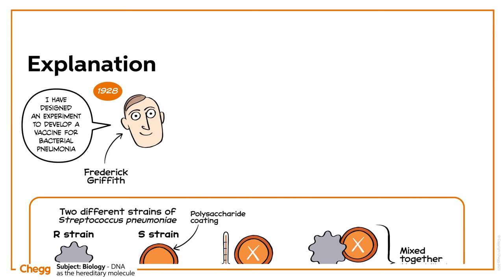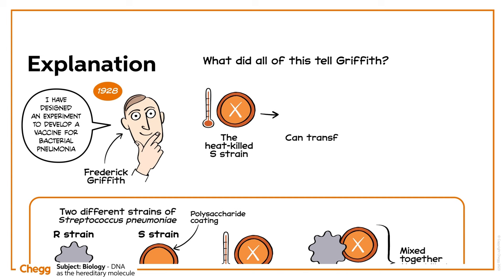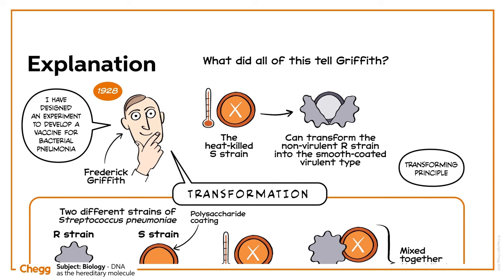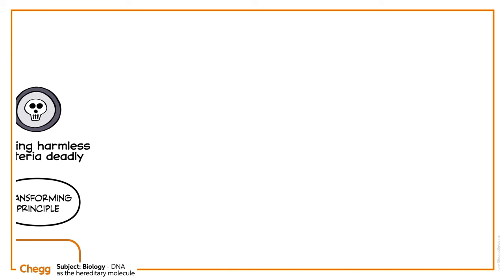What did all of this tell Griffith? The heat-killed S strain can transform the non-virulent R strain into the smooth-coated virulent type. Griffith named the process transformation. A transforming principle, he said, is transferred to harmless bacteria to make them deadly. The question remained: what could that transforming principle be?